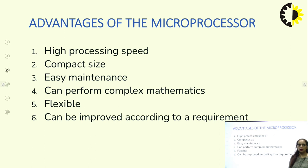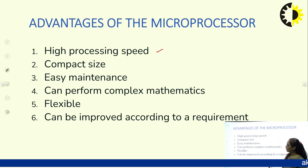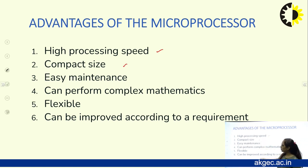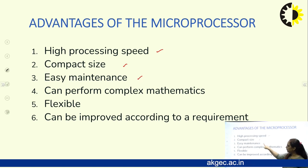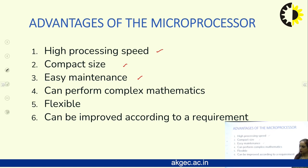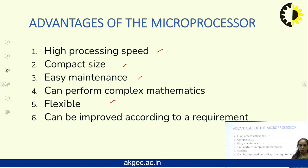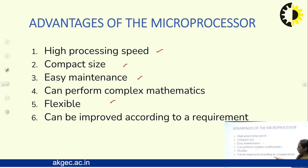The advantages of a microprocessor include: very high processing speed, small size, easy maintenance, ability to perform complex mathematical operations, and it is very flexible — we can interface our processor with external devices and it can be improved according to requirements.